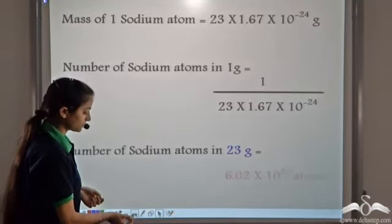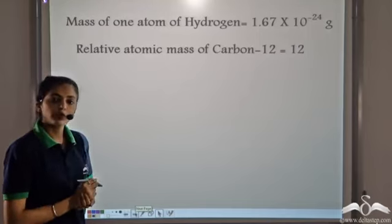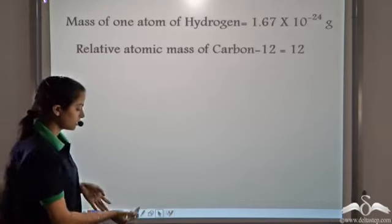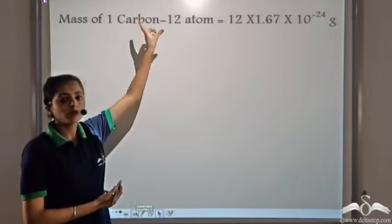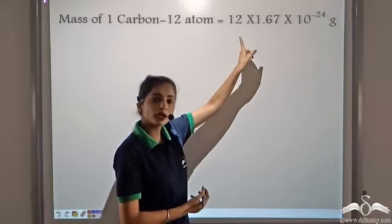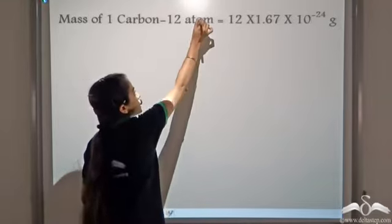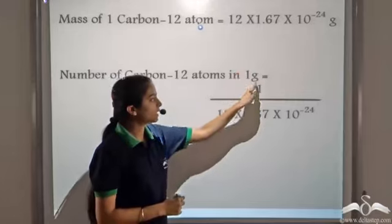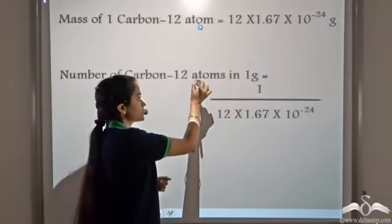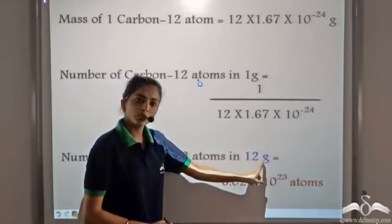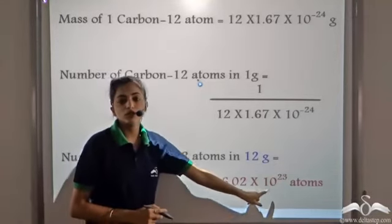Now let's look at carbon. The relative atomic mass of carbon is 12. The mass of one hydrogen atom is 1.67 × 10⁻²⁴ grams, so the mass of one carbon-12 atom is 12 times the mass of one hydrogen atom, that is 12 × 1.67 × 10⁻²⁴ grams. The number of carbon-12 atoms in 1 gram equals 1 divided by that number. If instead of 1 gram we take 12 grams, the 12s cancel, so the number of carbon-12 atoms in 12 grams is 6.02 × 10²³ atoms.